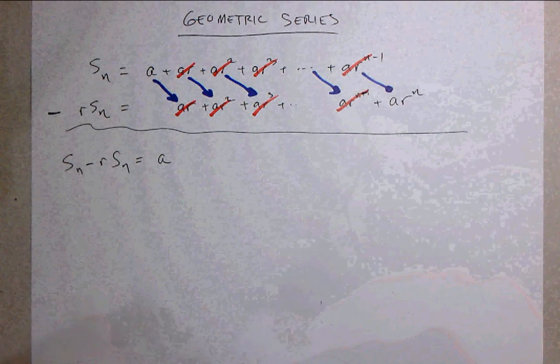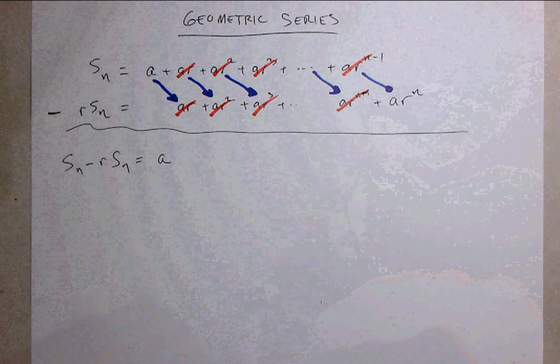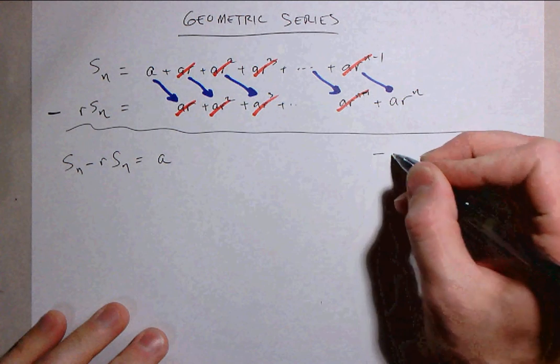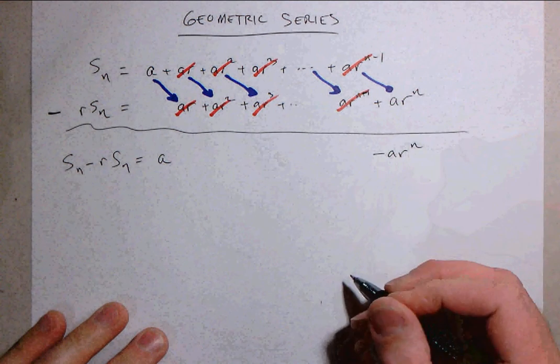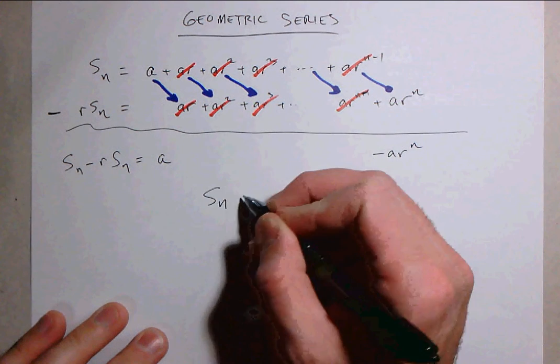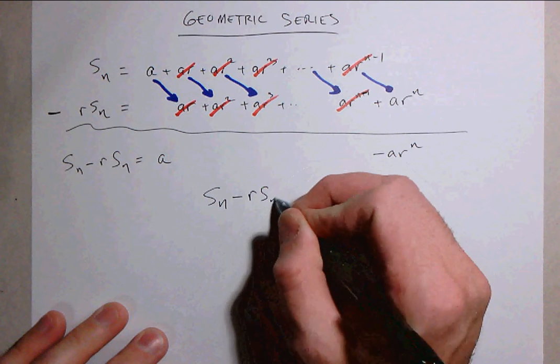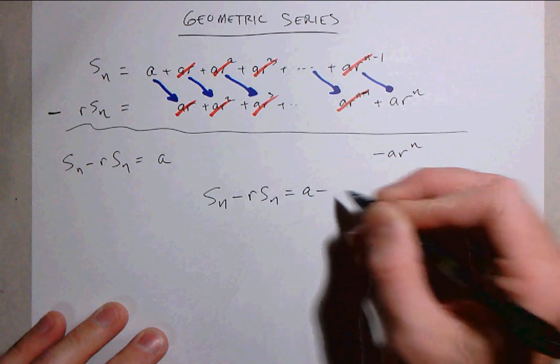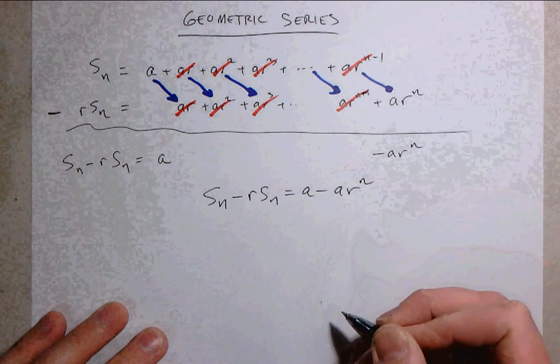Everything will cancel out until we reach the end. And at the end we'll just have minus a r to the n. So our formula is s sub n minus r times s sub n is equal to a minus a times r to the n.